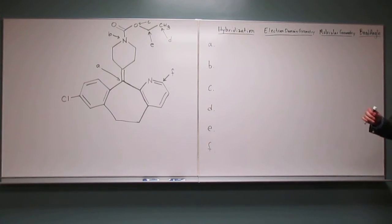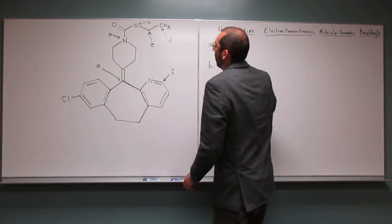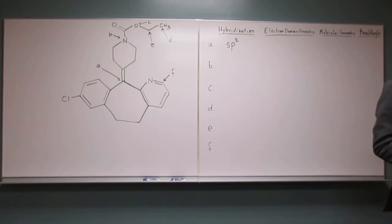What's the hybridization of A? Can you do that already? SP2. SP2. Why would you say that? How many, what does it have around it? Three. What do we call those things? Three electron groups. Electron groups, okay. So you've got to remember that. That's how you get to SP2.